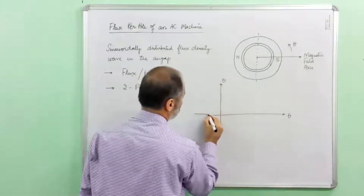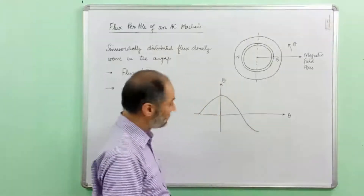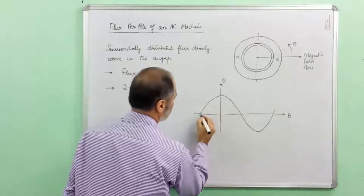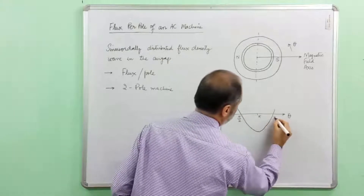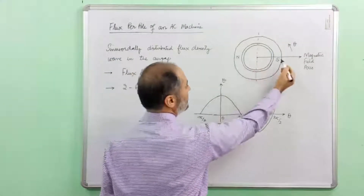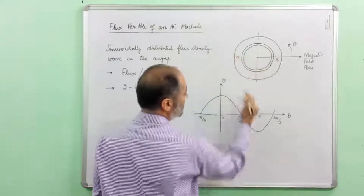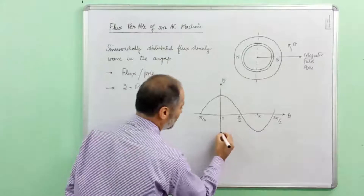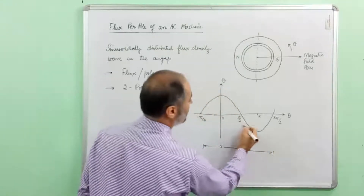We plot B versus theta. The axes go from minus pi by 2, through 0, to pi by 2 and beyond. We see that at theta equal to 0 the magnetic flux density is maximum, and similarly the magnetic flux density is maximum but negative at theta equal to pi — that is, at the axis of the south pole. So from pi by 2 to 3 pi by 2 we have a north pole.